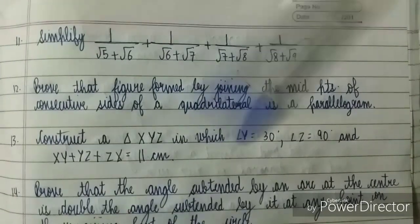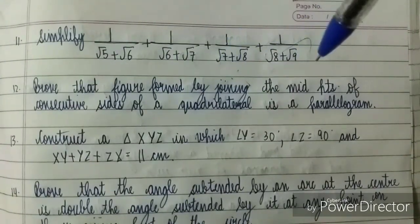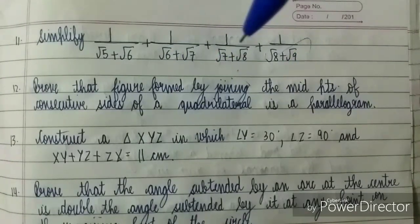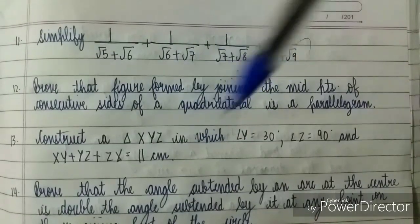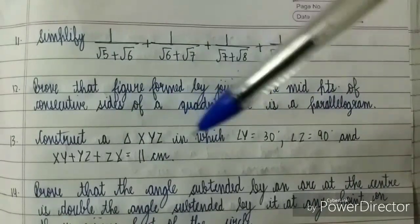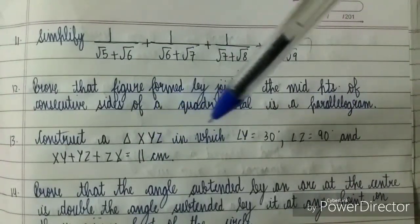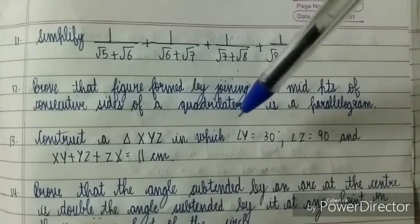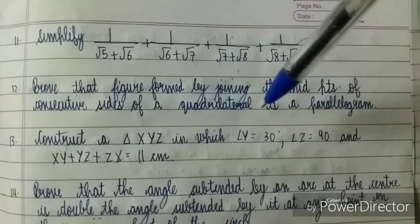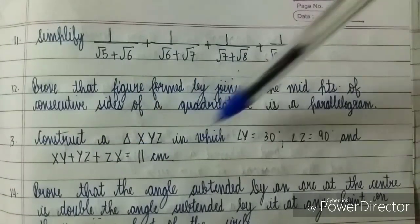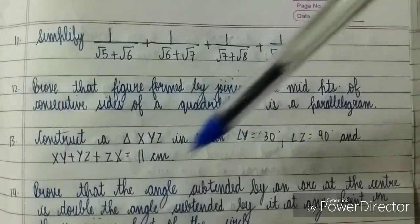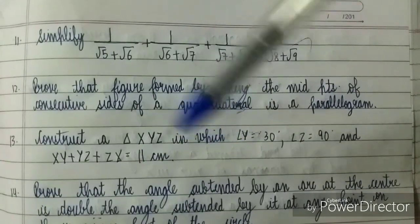Prove that figure formed by joining the midpoints of consecutive sides of a quadrilateral is a parallelogram. This is the same book question, very easy, from that chapter. It is generally seen in exams. Then construct a triangle XYZ in which angle Y is 30 degrees, angle Z is 90 degrees, and XY + YZ + ZX equals 11 centimeters. This is from chapter Constructions.